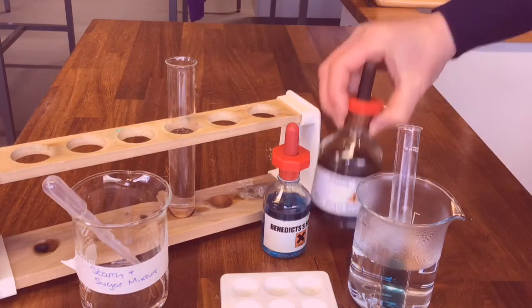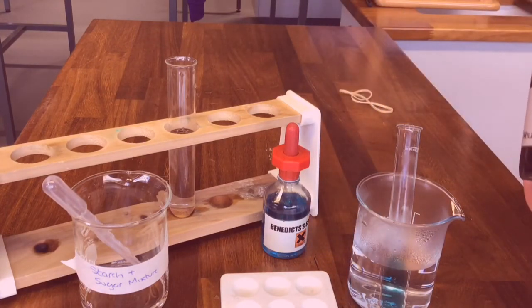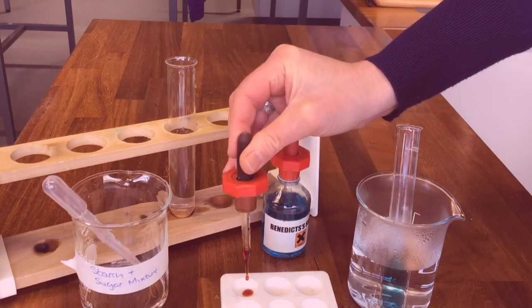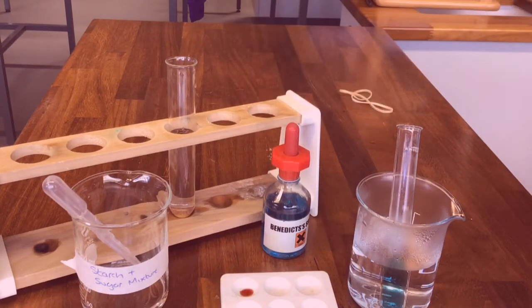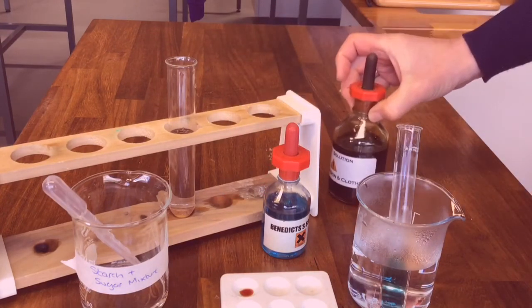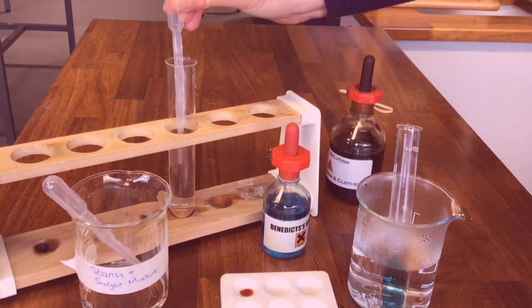Then with iodine we test for starch so we add a couple of drops of iodine to the spotting tile. Iodine is yellow-brown. If there's starch present it will turn blue-black.